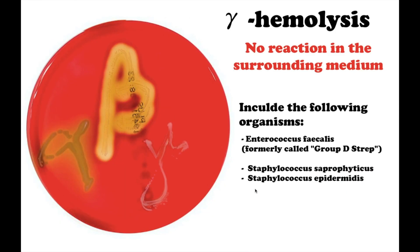If the organism does not produce hemolysins and does not break down the blood cells, no clearing will occur. There should be no reaction in the surrounding medium. This is called gamma hemolysis.